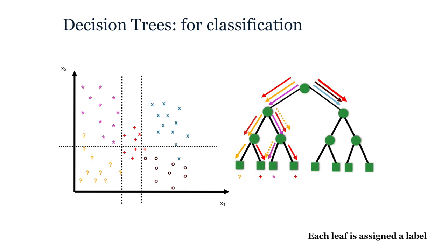The first leaf will be given the label of yellow question marks, the second will be given the class of red plus signs, the third pink asterisks, and the last leaf node of the initial left branch will also get a red plus sign label.